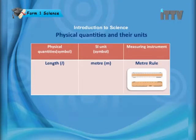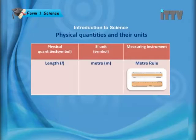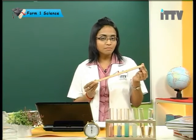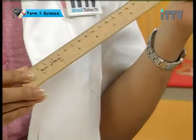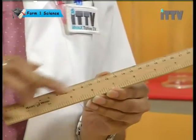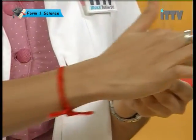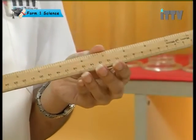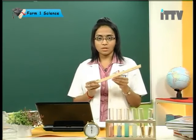Let's look at the measurements and tools used for SI units. First, the physical quantity is length. The symbol for length is L, the SI unit is meter, and the symbol for meter is m. The tool used to measure length is a meter ruler. Here we have measurements in centimeters and inches — a meter ruler found in a cloth shop would be longer.